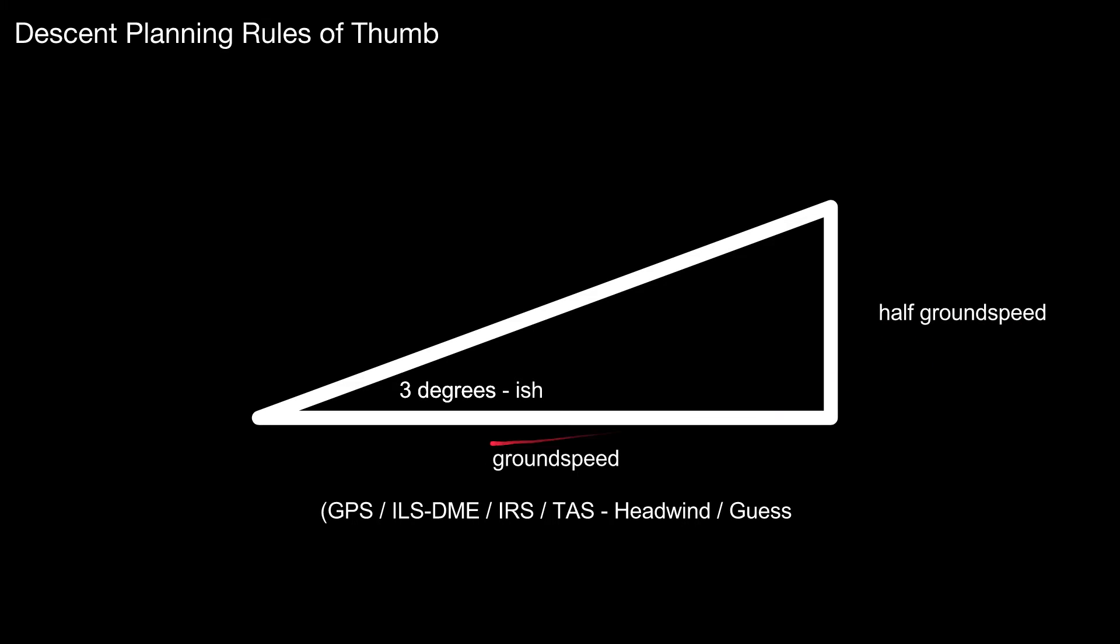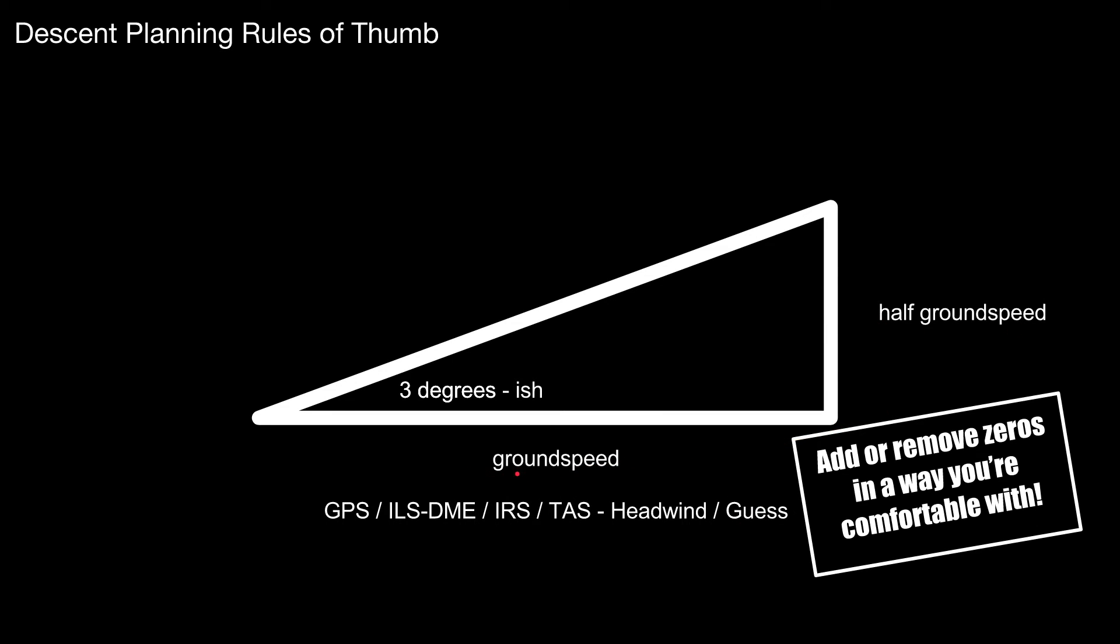It's basically half the ground speed. Ground speed is the horizontal element, half the ground speed for the vertical element. You can get the ground speed from your GPS, maybe from a standalone DME system. Your IRS might have it. Use your true airspeed, subtract the headwind or if you're flying a 172, just guess. About 60 knots ground speed would be a reasonable guess for most light aircraft landing into wind and that would be quite straightforward to work it out from there. When I say half ground speed, please bear in mind that there's zeros involved. If it's 300 then it would not be 150, it would be 1500. So add a zero on there afterwards or add a zero on there before you do the division. Either way it doesn't matter, however you're happy with it.